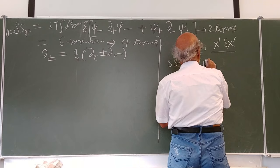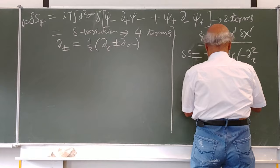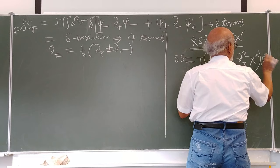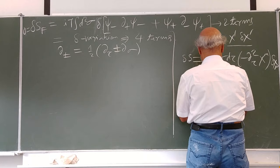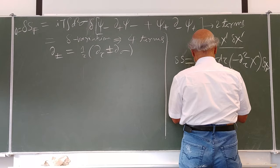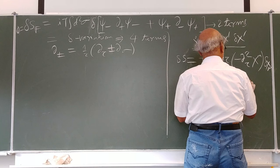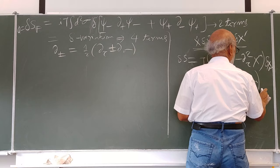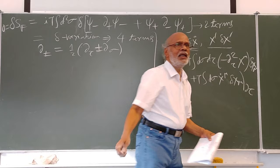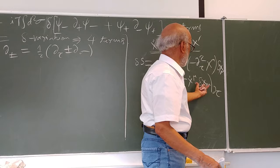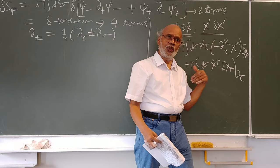We had terms of the type: one-half v-tau x-mu delta x-mu plus T d-sigma (1 + xi terms), and d-sigma delta-mu x-mu-dot delta x-mu. This term is at the time boundaries. We assume that delta x-mu vanishes at the time boundaries, t going to minus infinity and t going to plus infinity, so this term drops out.